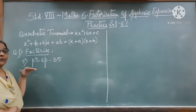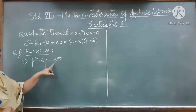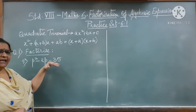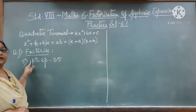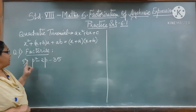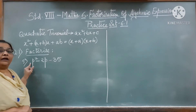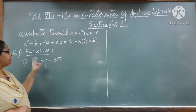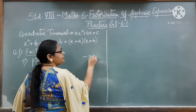Let us factorize Example 5 of Practice Set 6.1: P² - 2P - 35. To begin with, let us first find the product of the constant term and the coefficient of the first term — that is, the squared term. Here the square term is P². When there is no coefficient, we know that it is 1 always. So minus 35 multiplied by 1 is minus 35.